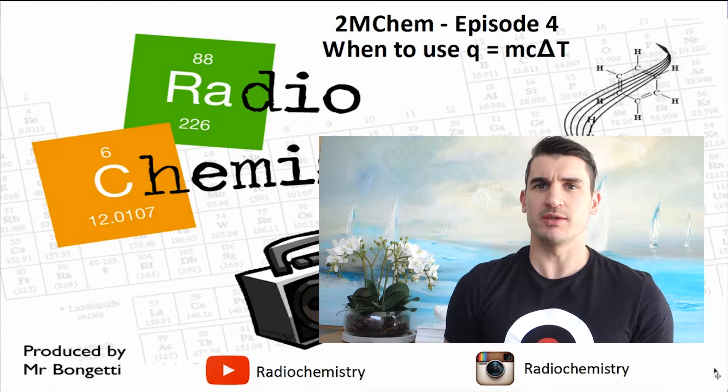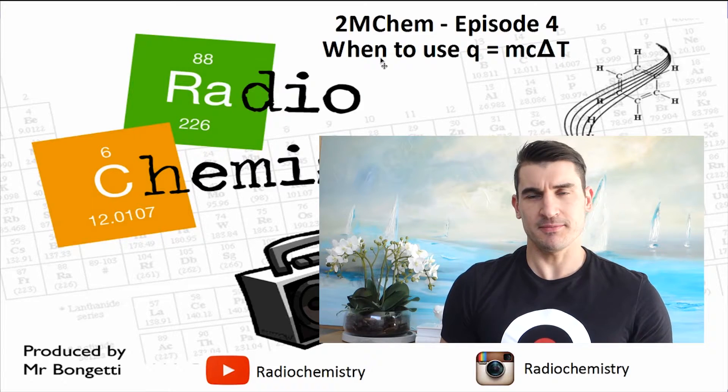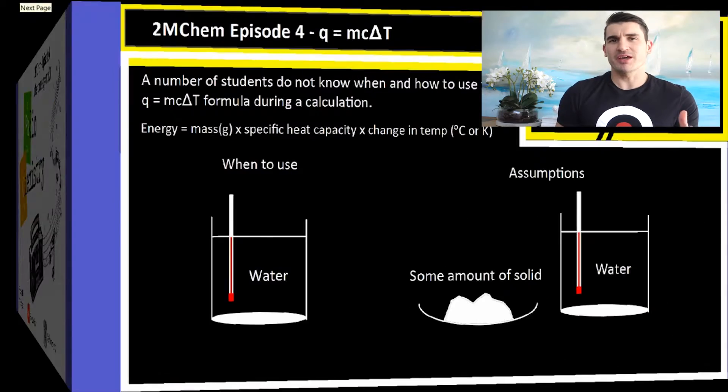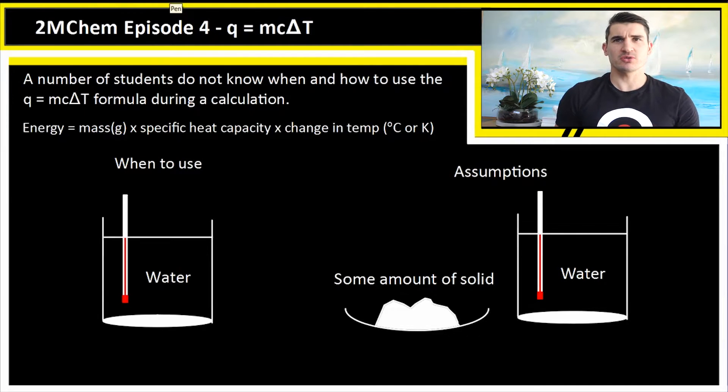Okay, so when to use Q equals MC delta T. A number of students don't know when to use it, so we're going to go through how you use it. Q equals MC delta T is used in a calculation. Energy Q is equal to the mass in grams times the specific heat capacity, generally of water 4.18 joules per gram per degree Celsius.